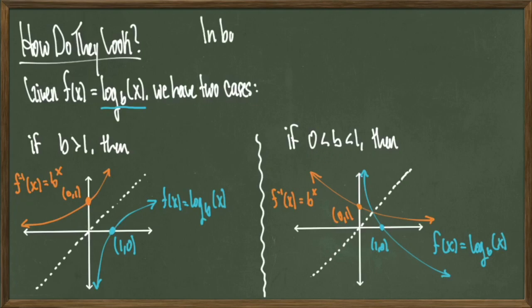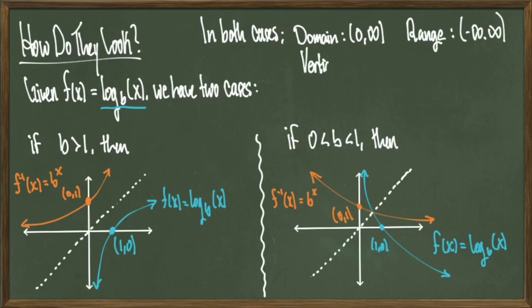Notice that in both cases log base b of x will have a domain of (0, ∞) and a range of (-∞, ∞). In other words, logarithmic functions cannot input negative numbers. This is why you're going to have the vertical asymptote at x = 0, aka the y-axis. We'll see in future examples how transformations of these graphs can move the vertical asymptote and can move the domain, but the range will always stay the same.